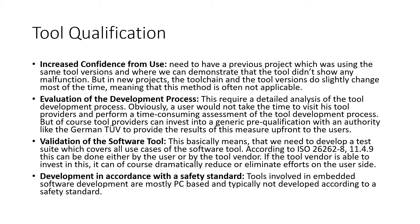Method B is evaluation of the development process. This requires a detailed analysis of the tool development process. A user would not typically visit the tool provider to perform a time-consuming assessment, but tool providers can invest in a generic pre-qualification with an authority like TÜV to provide results to users. Method C is validation of the software tool — developing a test suite covering all use cases of the tool per ISO 26262 Part 8 clause 11.4.9.